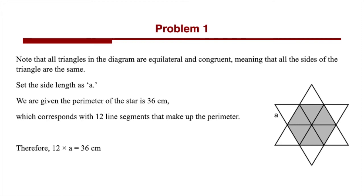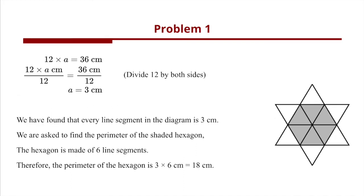All we need to do is solve this equation. Since 12 times a equals 36 centimeters, we divide both sides by 12: 12a divided by 12 equals 36 divided by 12, giving us a equals 3 centimeters. So every line segment in this diagram is equal to 3 centimeters.